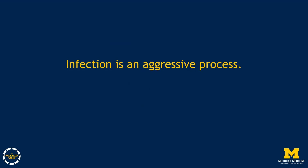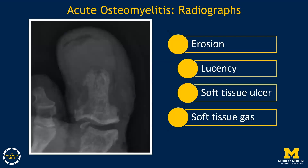When looking at imaging for osteomyelitis, remember that infection is an aggressive process — we're looking for evidence of bone destruction. These are the radiographic findings of acute osteomyelitis, meaning the first few days to weeks. We're looking for destruction of bone: erosion or lucency. Radiographs also show soft tissue changes — if we find the soft tissue ulcer or soft tissue gas, those findings point us to look at the underlying bone for erosion and lucency, such as in the distal phalanx.